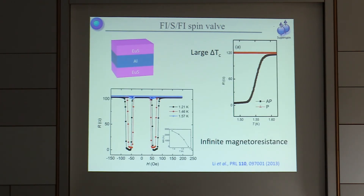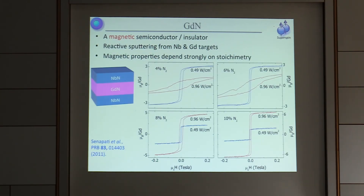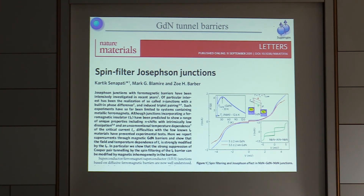We weren't the first people to look at this — this is Mudira's work with the standard europium sulfide/aluminium system, where at low temperatures and choosing the right temperature you have this infinite magnetoresistance. We have chosen for a number of years to work with gadolinium nitride as the ferromagnetic insulator. These are some of our initial studies of this material — it has a comparable Curie temperature to europium sulfide but can be grown very nicely with niobium nitride, a comparatively high-temperature superconductor. We then made superconducting junctions — this is a Josephson junction with a gadolinium nitride barrier, a spin-filter Josephson junction.